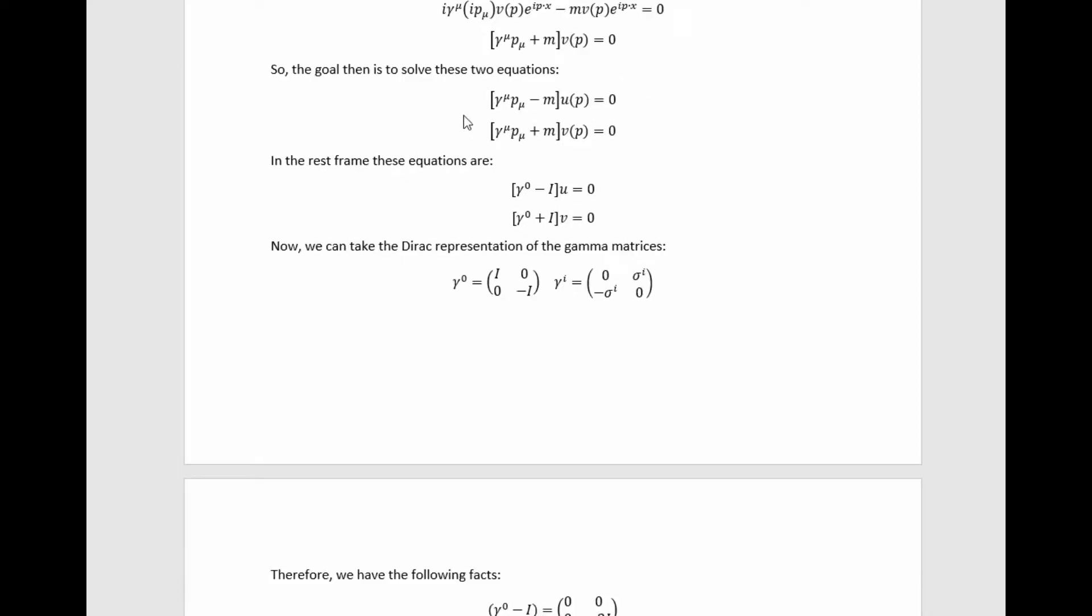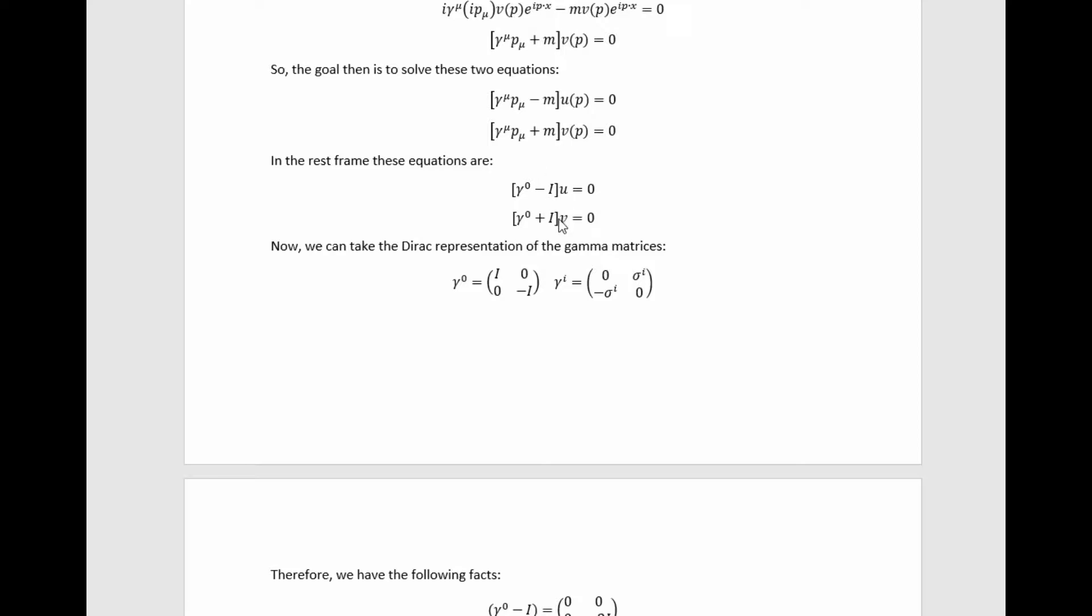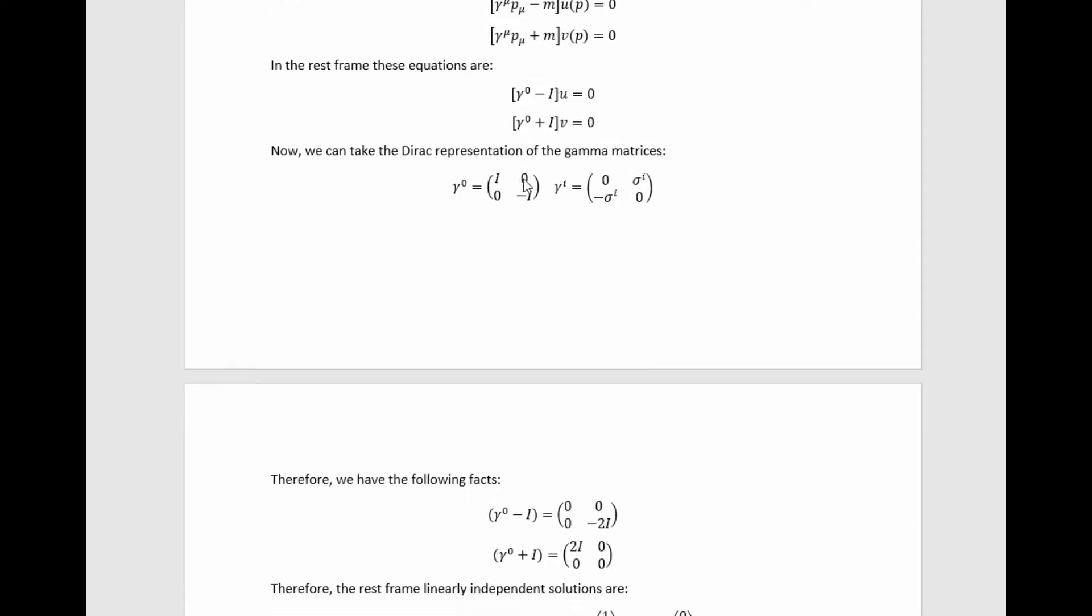In the rest frame, these equations collapse down to these. Now we can't go any farther without picking a particular representation for the gamma matrices, and the standard one to use here is the Dirac representation, which is given here.